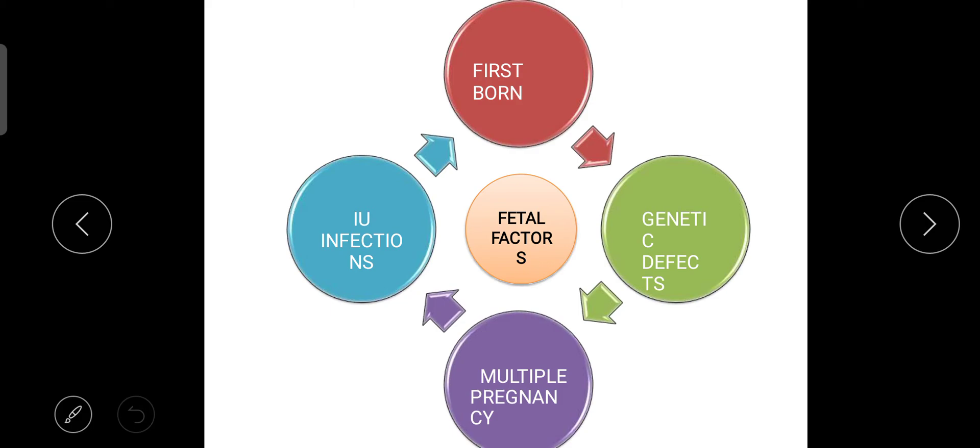Next is fetal factors. First we have studied about the maternal factors or maternal causes, now we will study the fetal factors. In the fetal: first born, genetic defects, multiple pregnancy, or intrauterine infections. If mother is having any infection when she was pregnant, or if it is multiple pregnancy, if the mother is having more than one baby, genetic defects in the newborn.